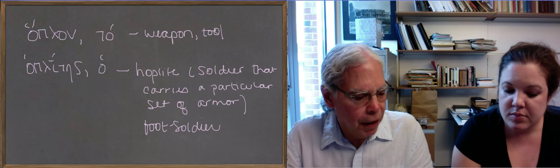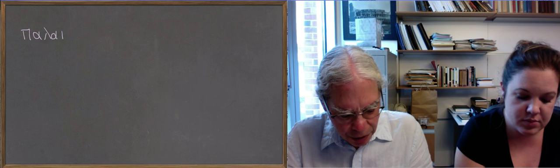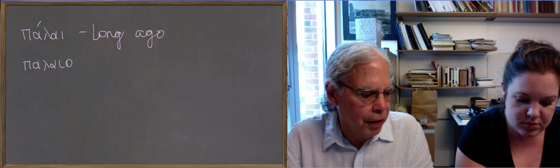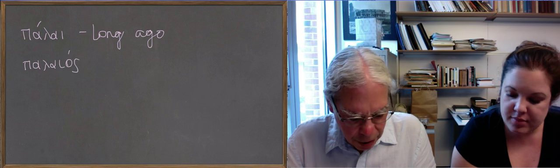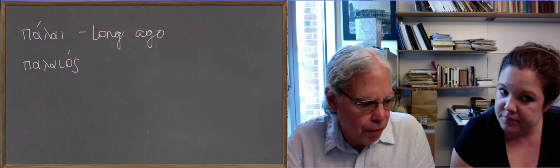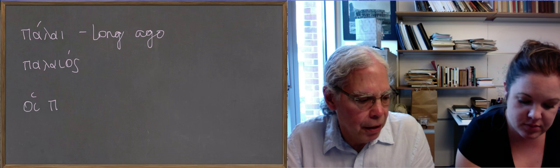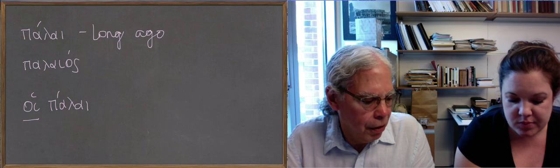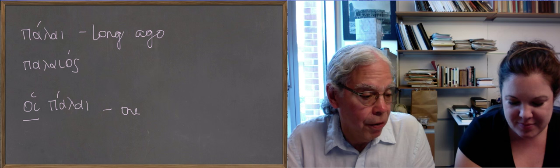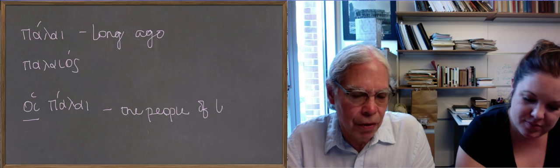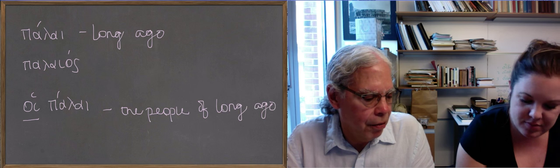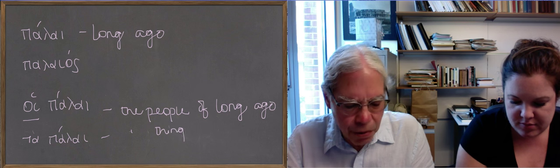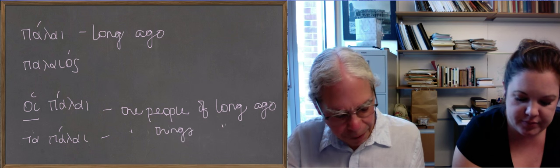Next word is palai, the adverb palai, an indeclinable adverb. That means long ago. The adjective palaios, which isn't here, comes from it, where we get paleolithic and paleography and stuff like that. But the cool thing about it that the book teaches you, and other adverbs of this type, is that you can put an article in front of it, and you can say something like hoi palai. That's the nominative plural masculine of the word for the. So it's the long ago, if you want, and it means the people of long ago. If it's ta palai, it would be the things of long ago. So it's a way of making a noun out of an adverb by using the definite article that Greek has. So you can say hoi palai, the people of long ago, and you can oppose it to hoi nun, the word for now.